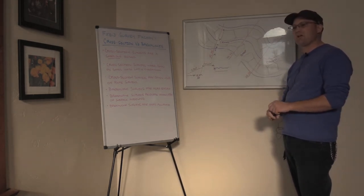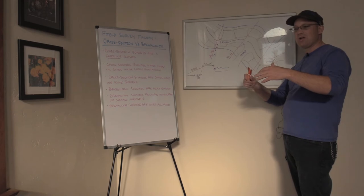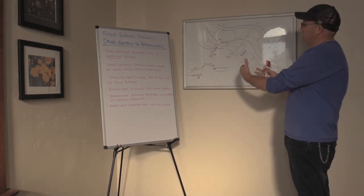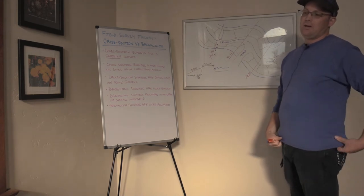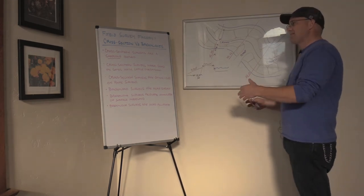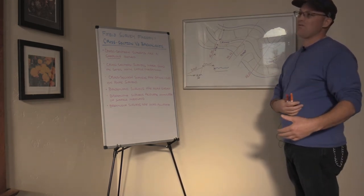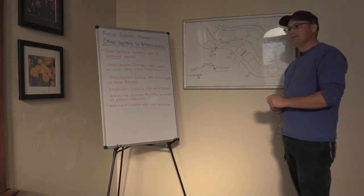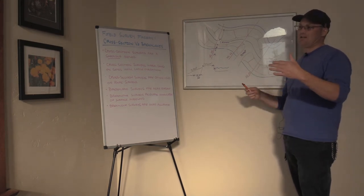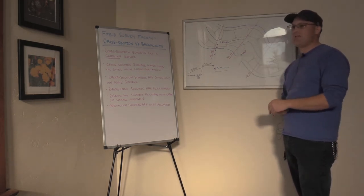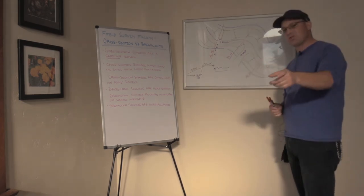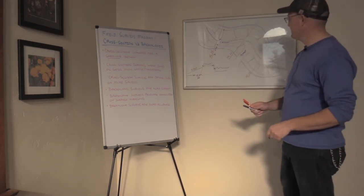One is because they're cheap. And two is because there's software and calculation methods that are still built to take cross sections as input. And what I would tell you is in that situation, what you should be doing is a break line survey that you use to generate your cross sections. Cause that's going to be more accurate, but a lot of engineers just don't understand that. Their software or their calculation method takes a set of cross sections. So that's what they want the surveyor to do. But if you're a good surveyor, you need to know the difference.